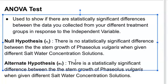And we're accepting the alternate hypothesis, because the critical value was less than our F value. There is a statistically significant difference between the stem growth of Phaseolus vulgaris when given different saltwater concentration solutions.